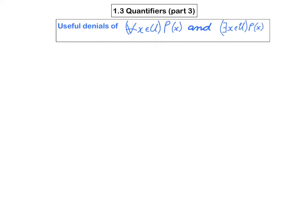This is part three of our series of videos on quantifiers. In this video, we're going to talk about how you get useful denials of propositions of the form: for all x in u, p of x is true, and there exists an x in u such that p of x is true.